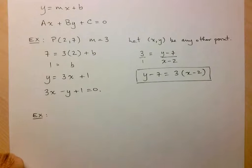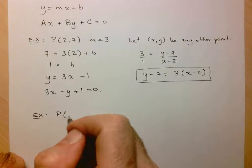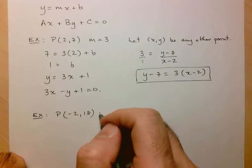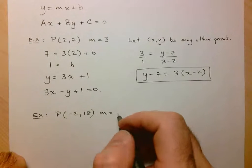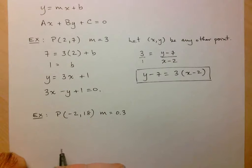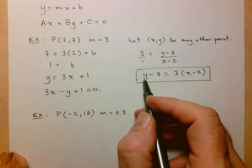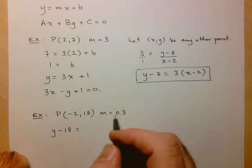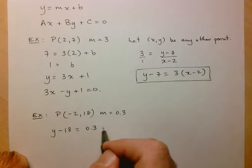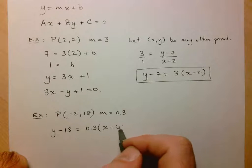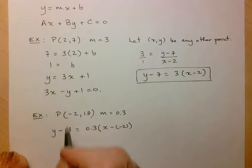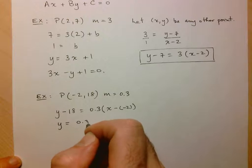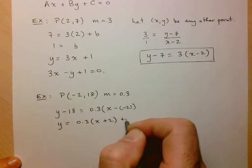So before I finish this off, let's look at another example. Let's say I have my point is (-2,18) and my slope is equal to 0.3. Well, let's use this format here. On the left-hand side, I just have y minus the y value, 18, equals then 0.3, my slope, times x minus negative 2, which is my x value. So in the end, I could write this as y=0.3(x+2)+18.